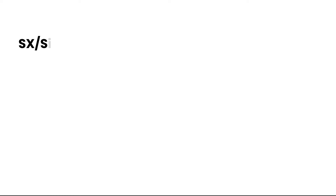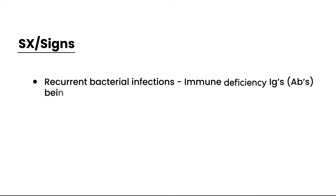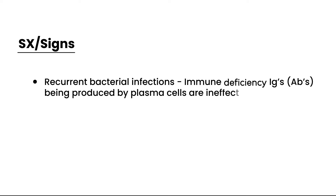The first sign and symptom to discuss is recurrent bacterial infections. In multiple myeloma, the patient is in a state of immune deficiency because the immunoglobulins or antibodies being produced by the plasma cells are actually ineffective. Because the immune system is not working properly, the person will be more prone to getting bacterial infections.